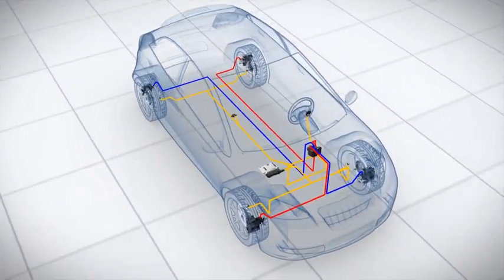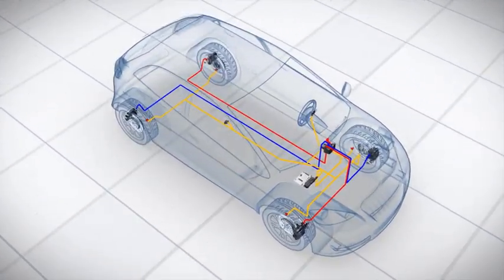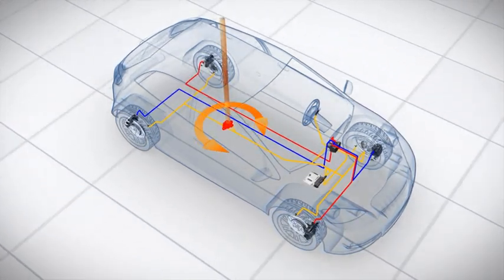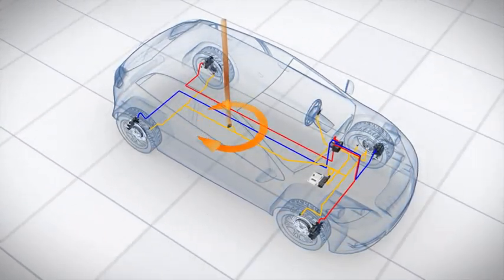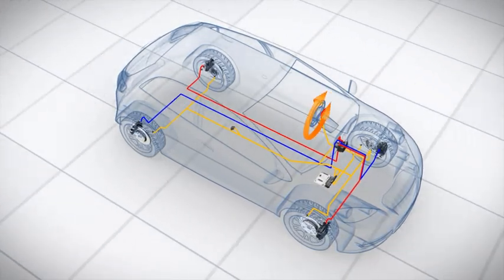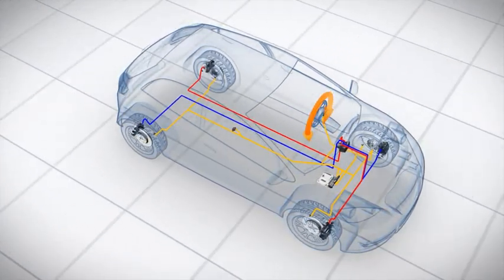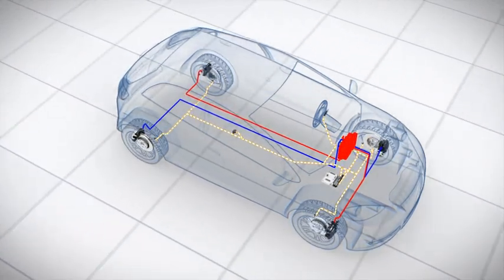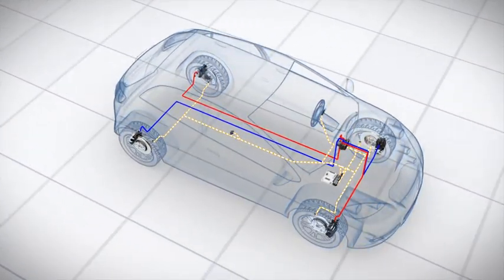ESP comprises the following components: a speed sensor on each wheel, a yaw rate sensor which measures the vehicle's rotation around its vertical axis, a steering angle sensor which registers the driver's steering intention, and sensor signals which enable the control unit to compute when and how it should intervene.